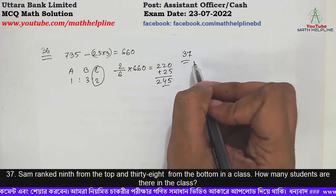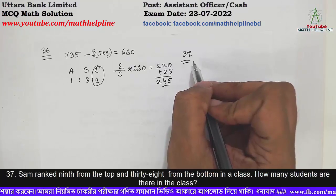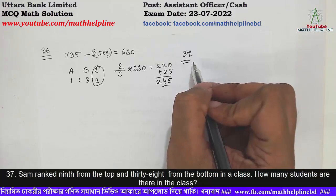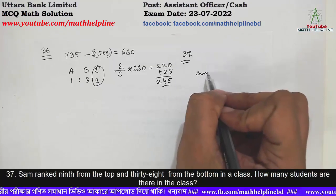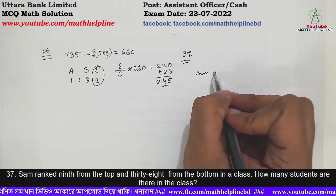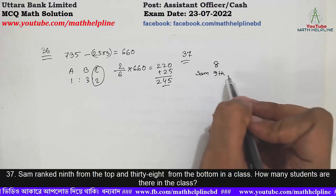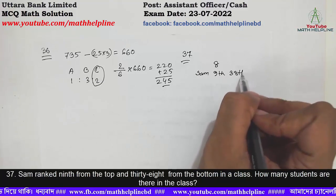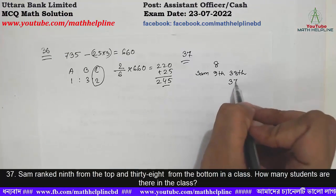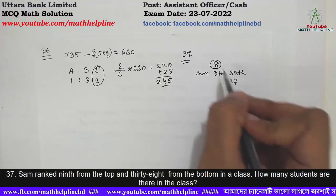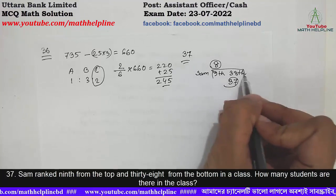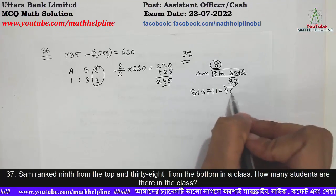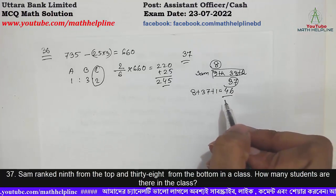How many students are there in the class? Working out from the top, calculating 9. Then calculating from below. Total how many students are there — we fix the total students count. Total students, working out the calculation carefully.